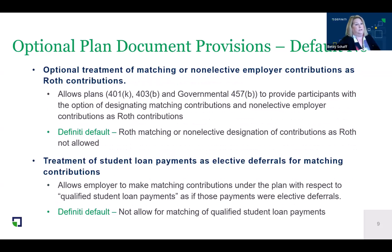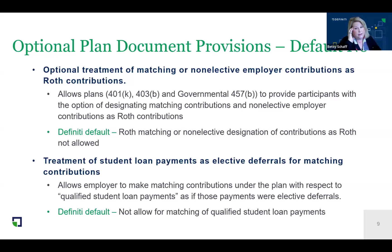Some things we are not defaulting into: optional treatment of matching and non-elective contributions as Roth contributions. SECURE 2.0 said that pre-tax matching or profit-sharing contributions could be elected to be included in income and treated as Roth. We're not going to offer that at the outset because a lot more guidance is needed in this area and many record keepers aren't ready to offer this option. If you want to do this, you could override it through the website.